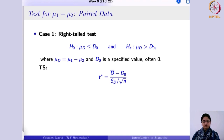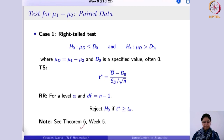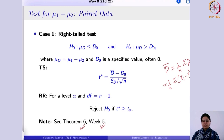This comes from Theorem 6 in Week 5. There, d-bar is 1 over n times the summation of di's, where di's are the differences between xi and yi. You take the difference, sum over all n values, and divide by n to get the average. d-naught is the difference of the two population means — that is, μ1 minus μ2 under the null hypothesis — divided by the standard error to give the test statistic.